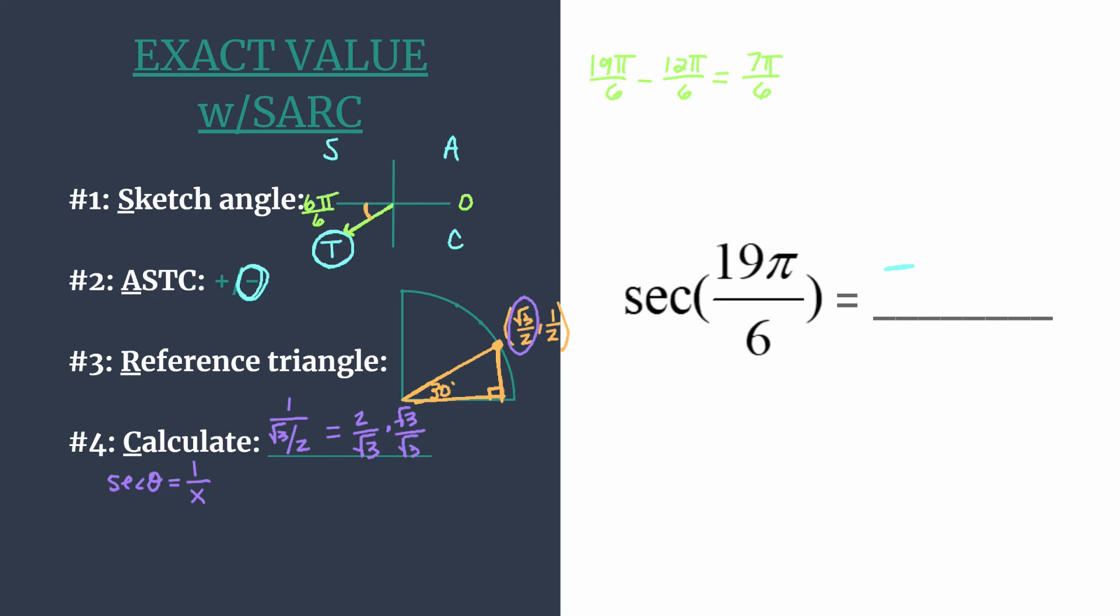We don't want that radical in the denominator in our final answer, so let's rationalize. Multiply by √3 over √3 and you'll get 2√3 over 3. Of course we know it's negative from step 2, so the secant of 19π over 6 is negative 2√3 over 3.